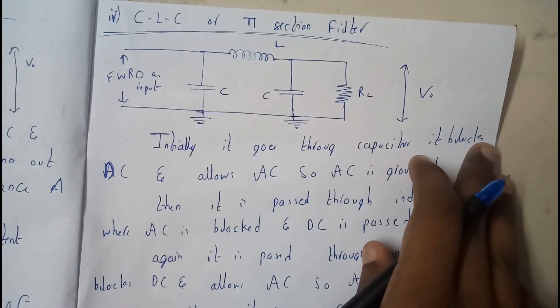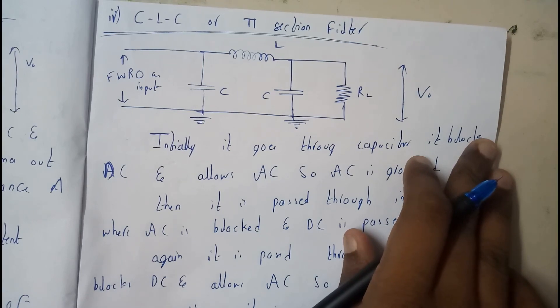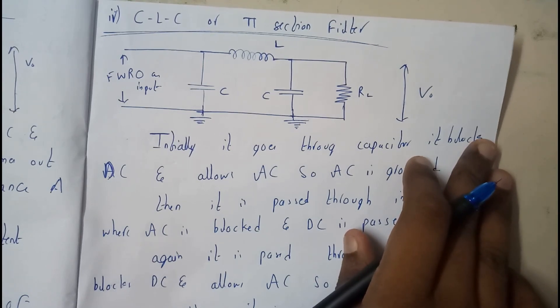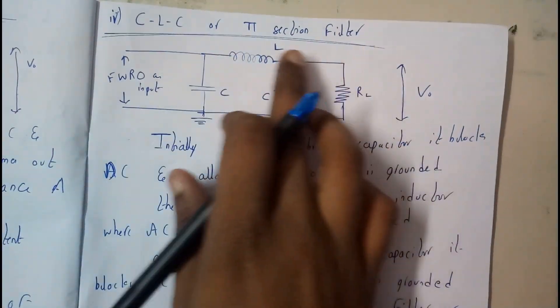Hello guys, we are back with our next tutorial. In this tutorial, let's see all about CLC filter. This is one of the most basic and small filters. It's really easy, and it is also called a pi-section filter as the symbol pi.